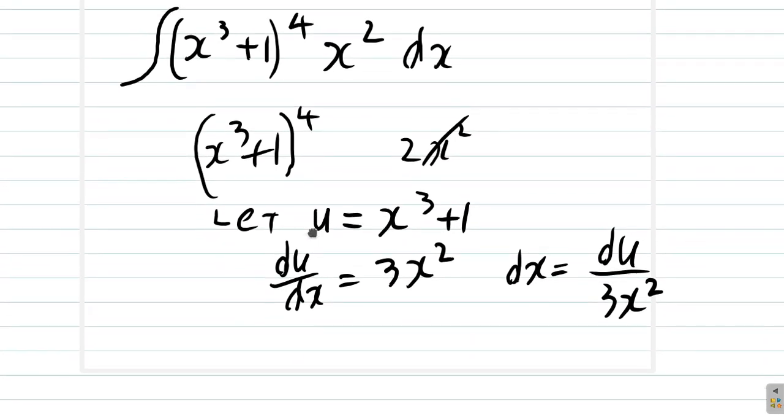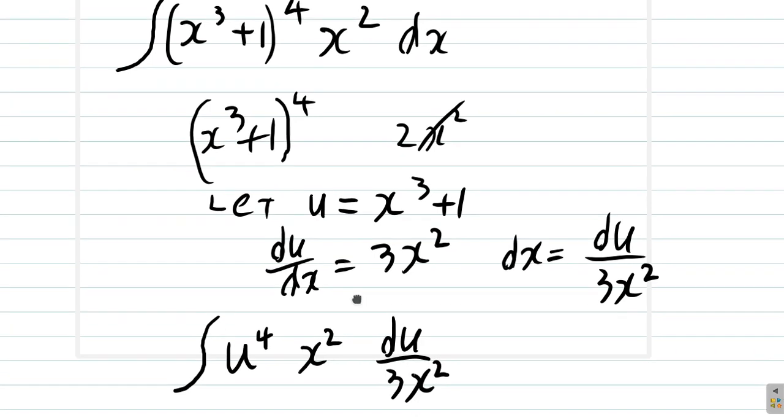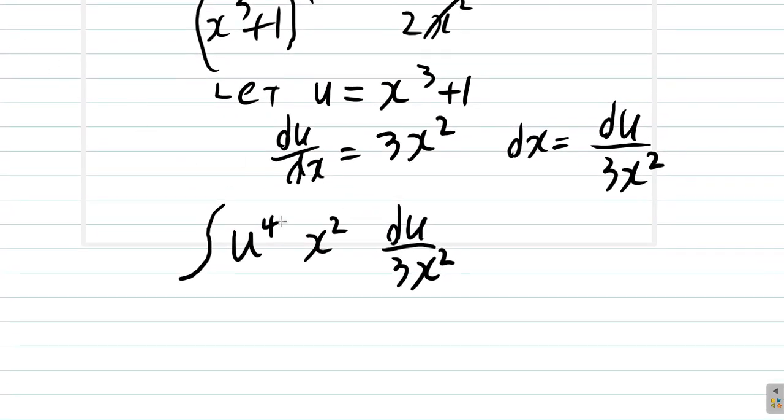So what you have is the integral of u to the 4th times x squared dx. But you will write du over 3x squared instead. It's du over 3x squared. See that? Now you can see that x squared over x squared is 1, so they cancel.